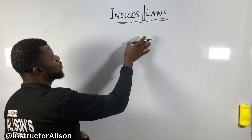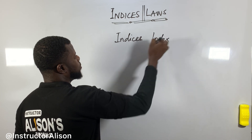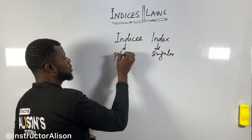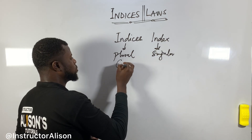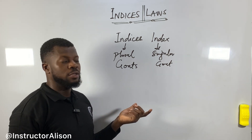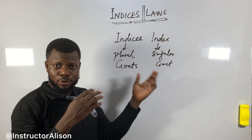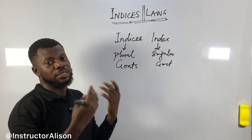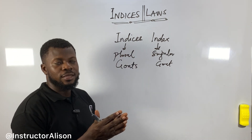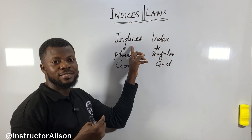Before we talk about the laws, let's talk about what indices are. When you see something like 'index,' that is the singular form. When you see 'indices,' that is the plural form. So if you have one, it's an index; if you have many, they are indices — just like 'good' is singular and 'goods' is plural.